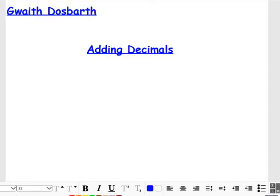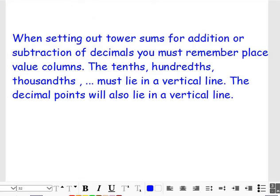So adding and subtracting decimals, we apply exactly the same method as if we were adding and subtracting whole numbers, where we use our tower or column method. However, this is really important. When setting out tower sums for addition or subtraction of decimals, you must remember place value columns.